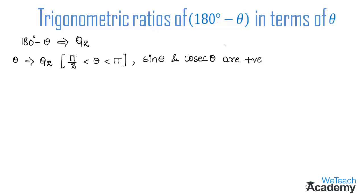Let us find the trigonometric ratios of 180 degrees minus theta in terms of theta. First, let us begin with sine. For sine of 180 degrees minus theta: since 180 degrees minus theta lies in the second quadrant, sine is positive. Also, 180 is an even multiple, so sine remains sine. Therefore, sine of 180 degrees minus theta equals positive sine theta.